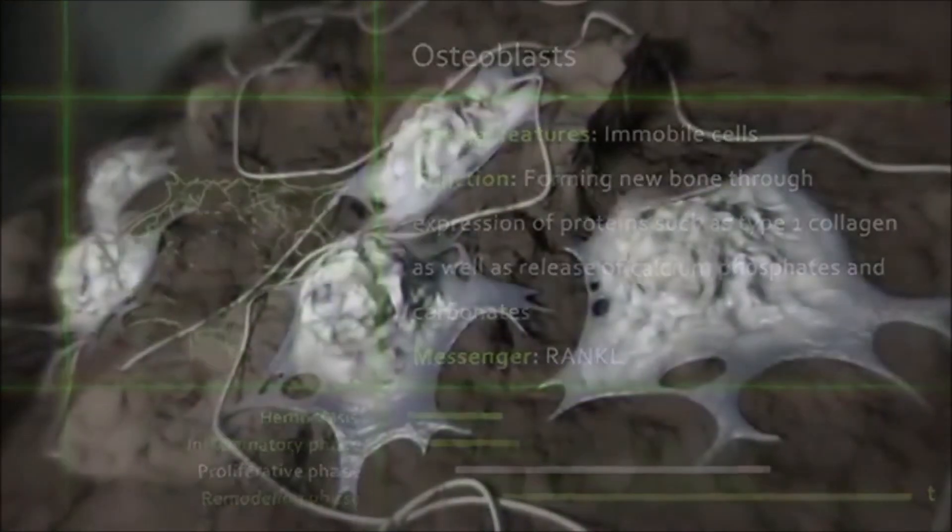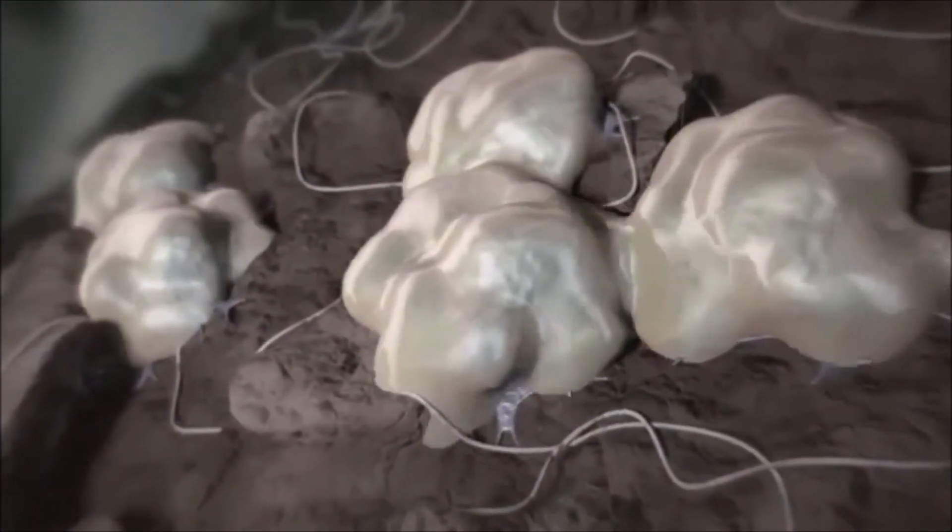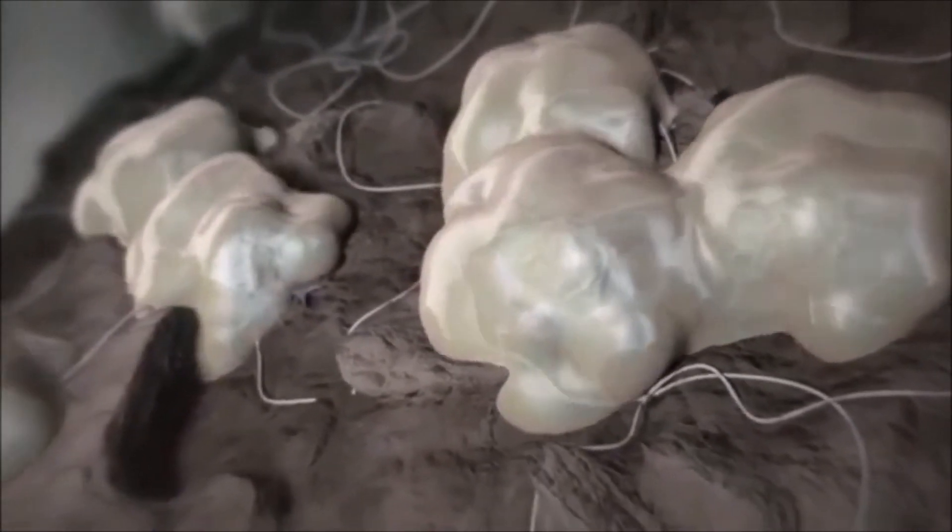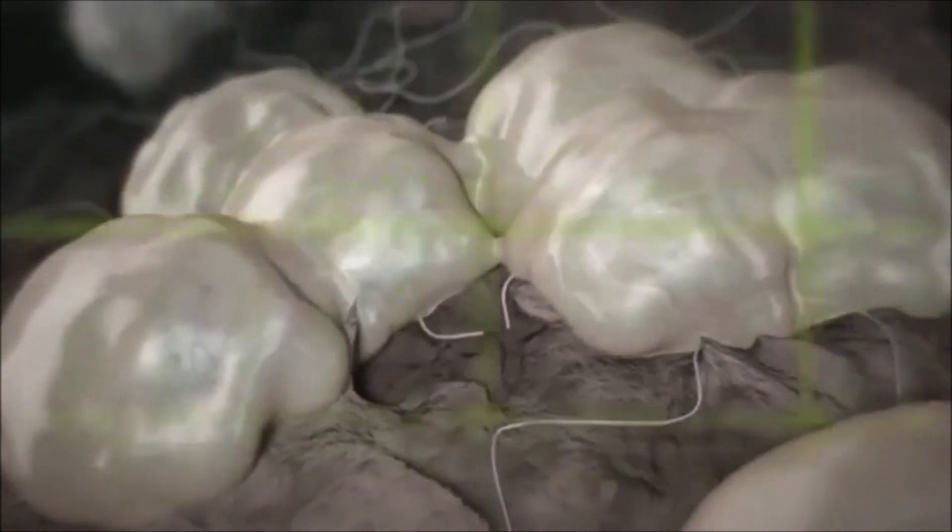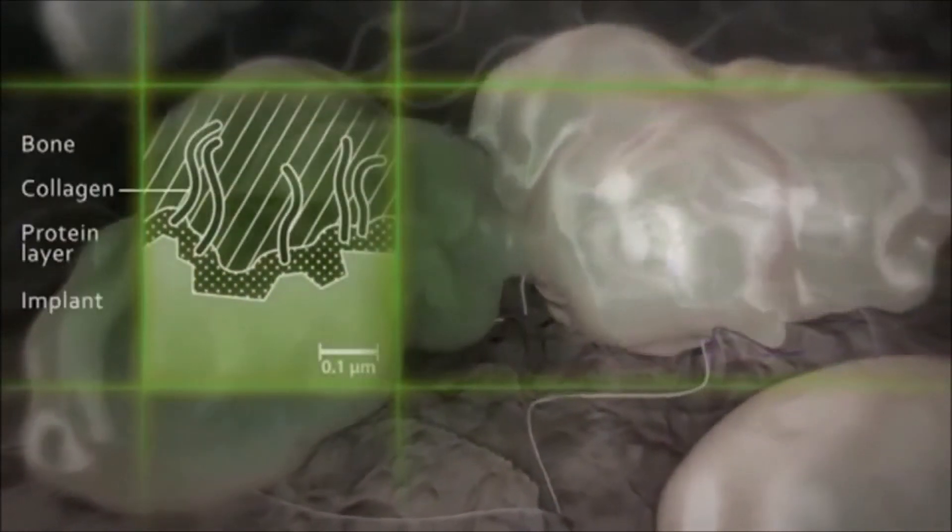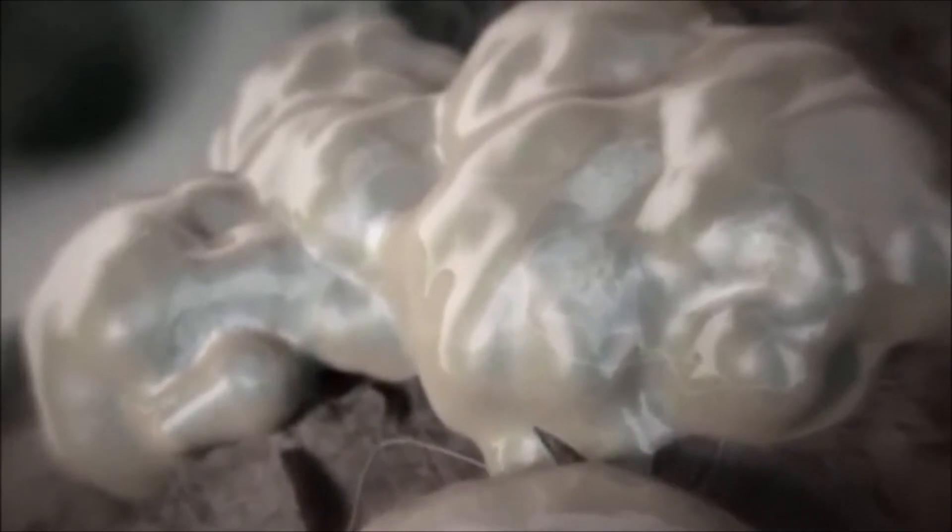The osteoblasts form an organic matrix that is mineralized by incorporating calcium phosphate. Under the optical microscope bone is visible on the implant surface. Under the electron microscope though, a thin protein layer is seen between the bone and the titanium surface. Mechanical stability is ensured by interlocking with the surface of the implant.